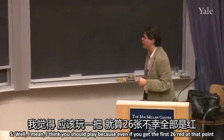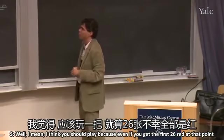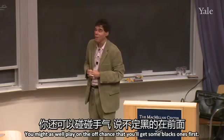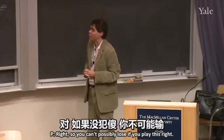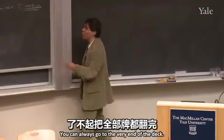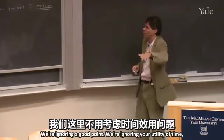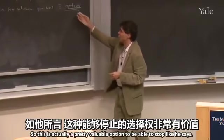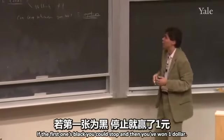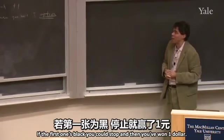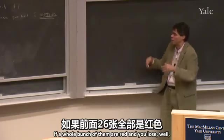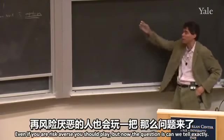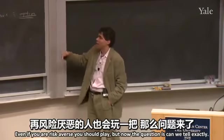You can always go to the end of the deck and assure yourself of 0. So this is actually a pretty valuable option. If the first card is black you could stop and you've won a dollar. If a bunch of them are red and you're losing, you can always go to the end of the deck and get 0. So you're never going to lose and you have a chance of winning. Obviously you should play — even if you are risk averse — because your worst case is 0. But the question is: suppose you're risk neutral, how many dollars do you expect to win?